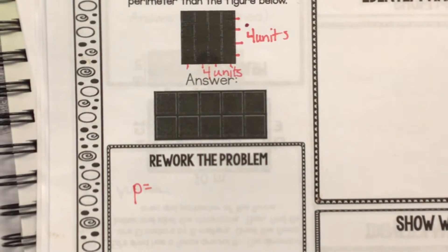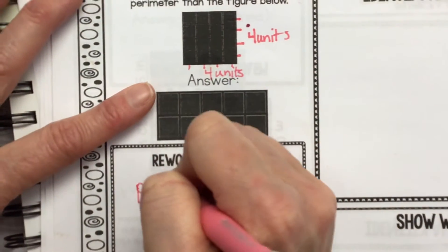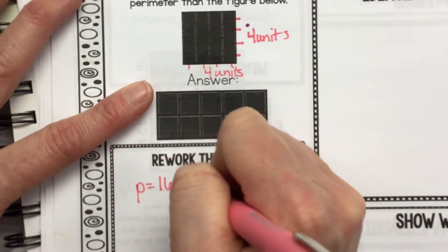16. Four, four, four, four and four makes the perimeter 16 units.